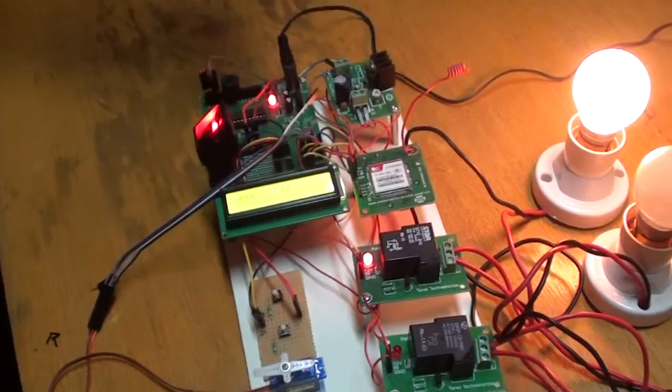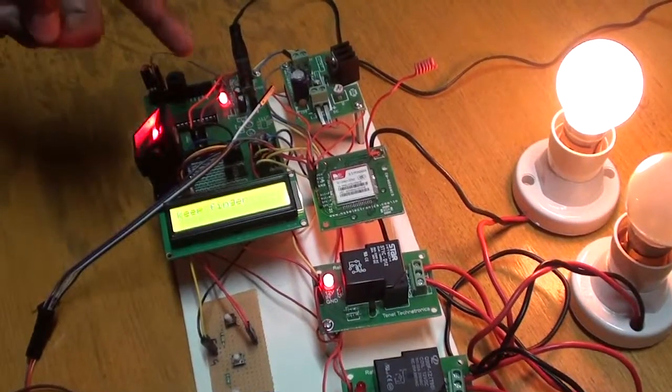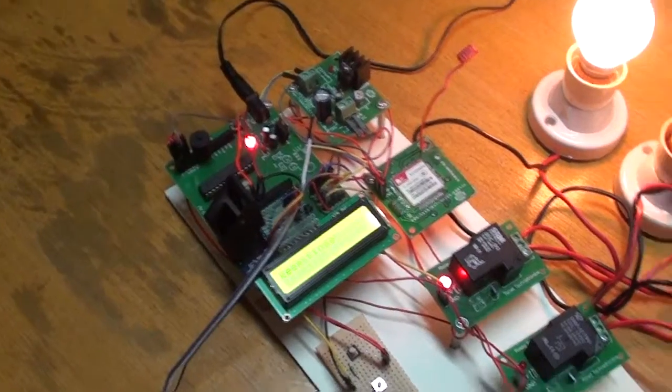The message will be sent to the number programmed in the microcontroller. The message is shown on the phone like this: unauthorized user.